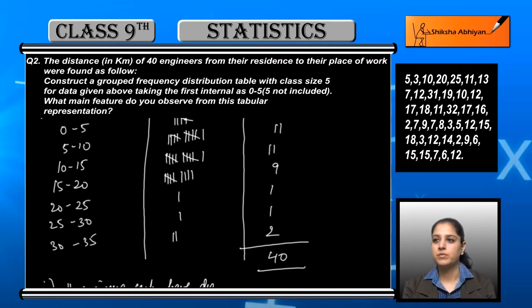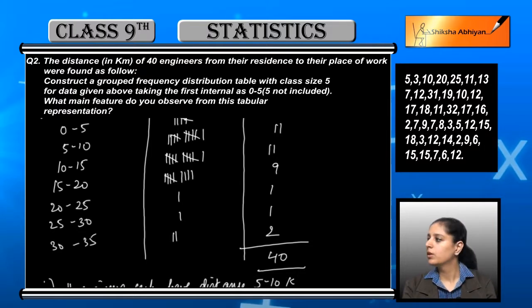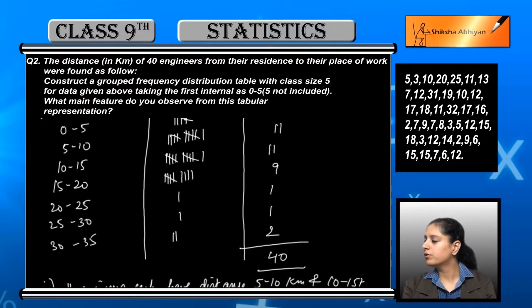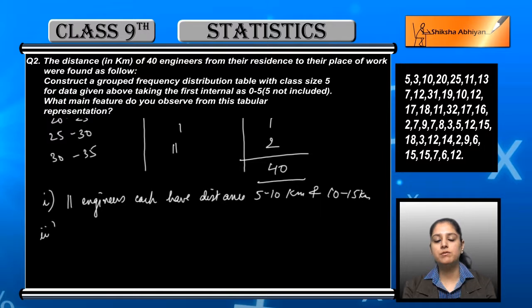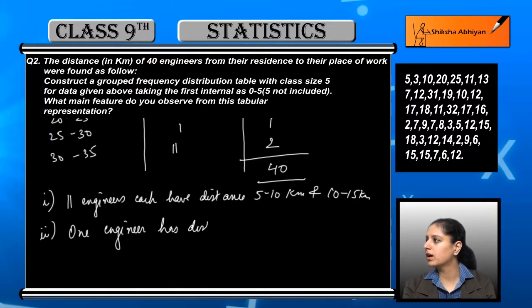Now we need to identify the main features. From this we can say that 11 engineers fall in 5 to 10 and 11 engineers also fall in 10 to 15. The frequency of 10 to 15 and 5 to 10 is 11. We observed this and this is a key feature we observed.